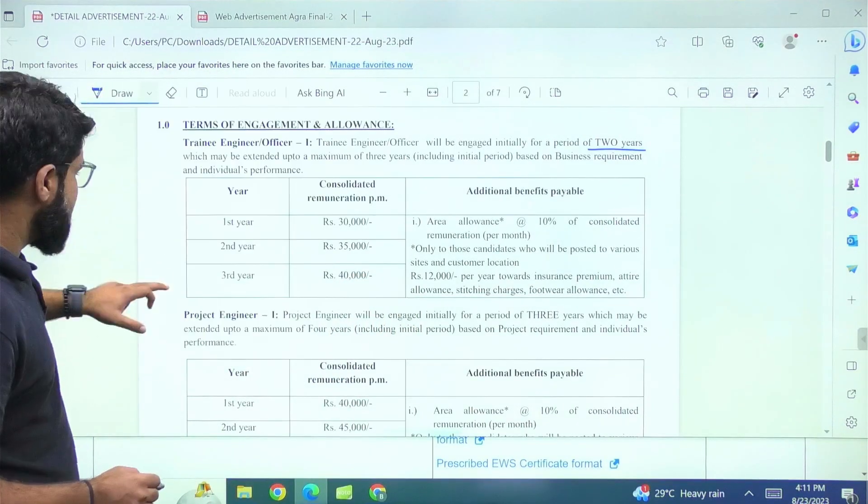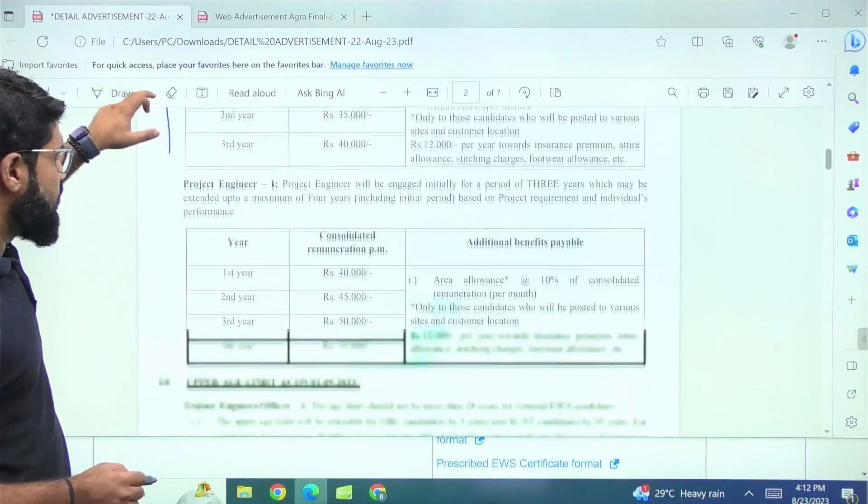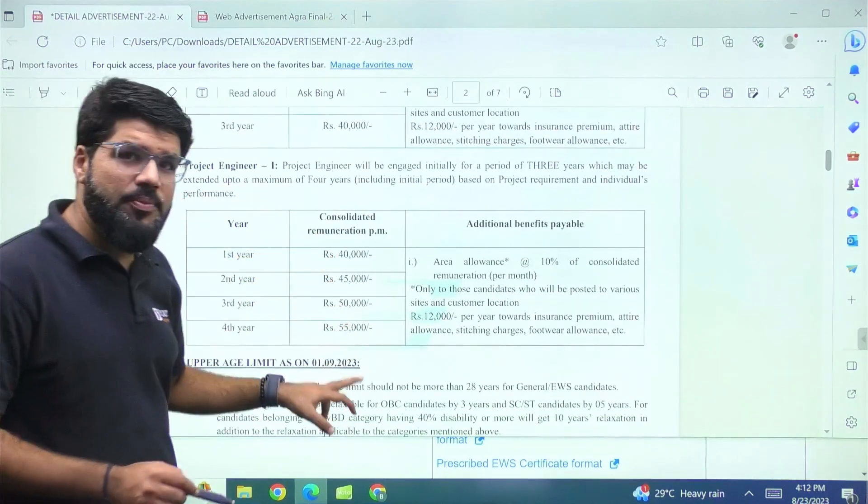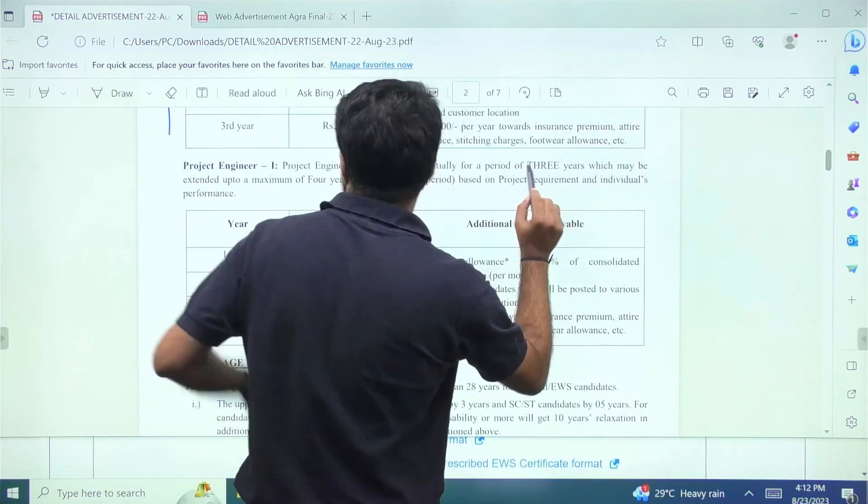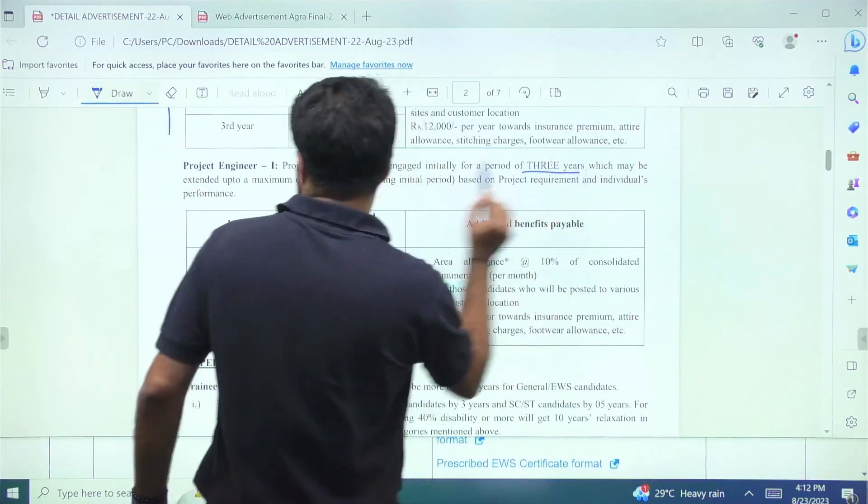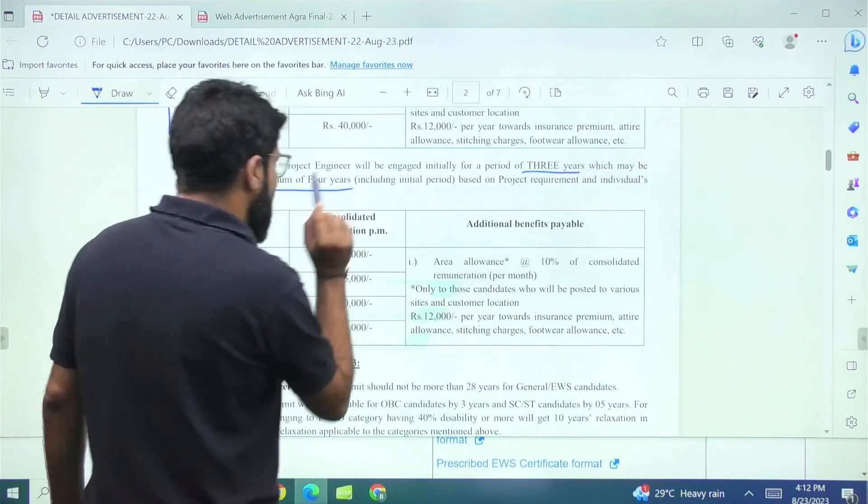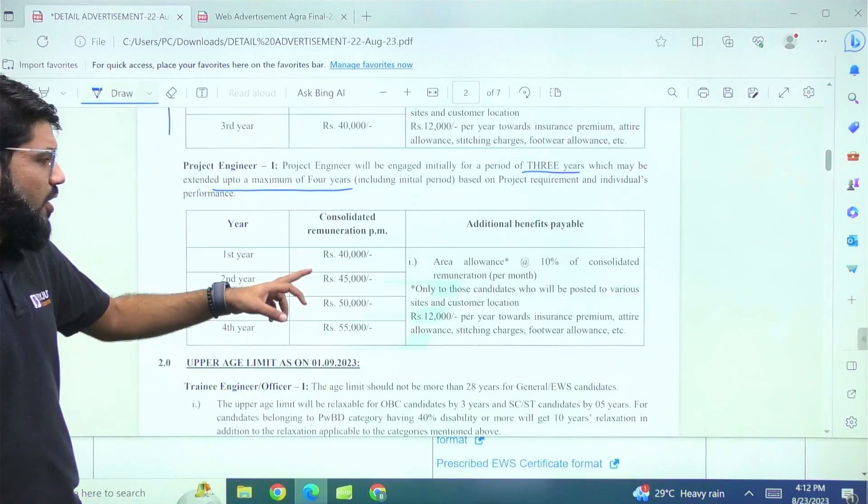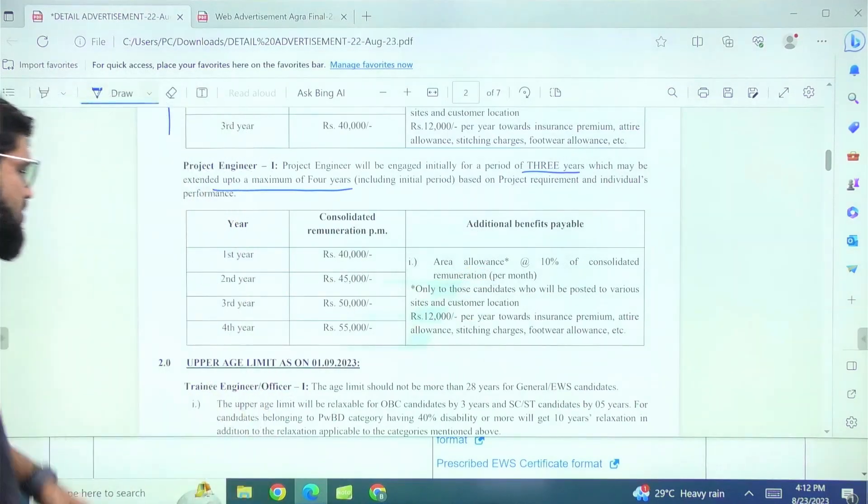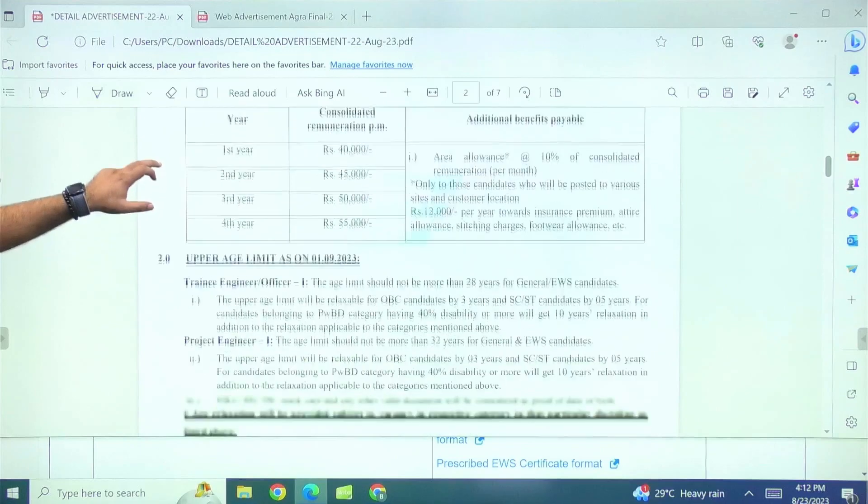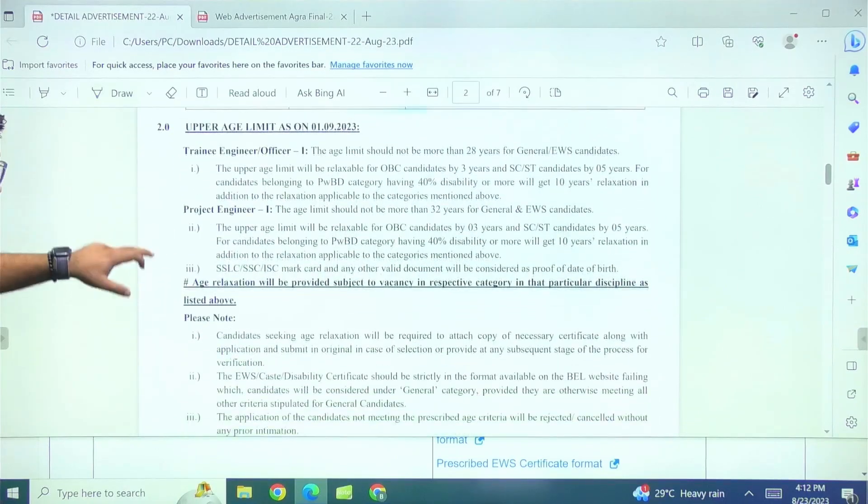And the renumeration is for second and third year it is 30, 35,000 and 40,000 respectively. In addition to it, you have area allowance at 10% and 10% of whatever is your per month amount, you get an extra 10% allowance. But this is for those candidates who will be posted to various cities and customer locations. Also 12,000 per year you get for your insurance premium attire stitching, etc. This is all additional. Now, if we talk about the project engineer here, so this is the renumeration mentioned and for project engineer, it's for a period of three years, which can be extended up to a period of four years.